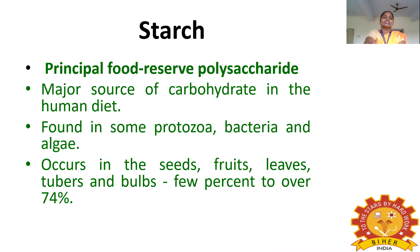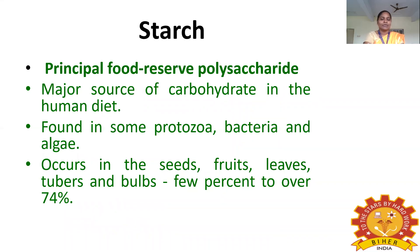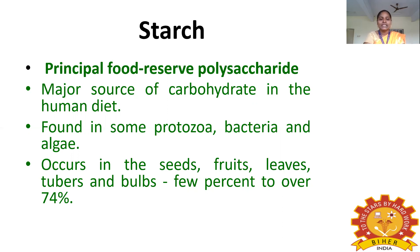Starch is the storage form of polysaccharide in plants. Its principal role is to reserve food in the form of polysaccharide, and it is a major source of carbohydrate in the human diet. It is found in some protozoa, bacteria, and algae, and occurs in seeds, fruits, leaves, tubers, and bulbs at levels from 1% to 74%.